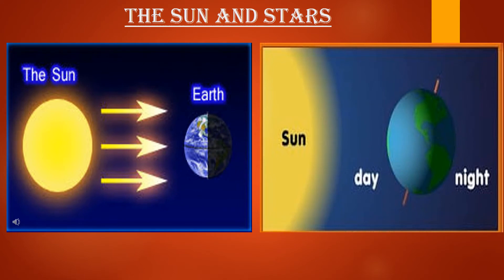In the last lesson you learned that there are billions of stars in the universe and the Sun is also a star. The Sun provides heat and light to the Earth as it is our nearest star — the Sun is nearer to planet Earth compared to other stars, so it provides us with light and heat.